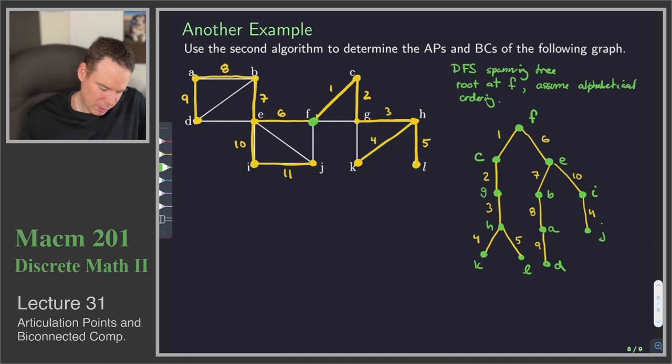Now we can add our back edges in. There was a DB back edge, so I find D in the list and draw that back edge up to B. Then there was the DE one.